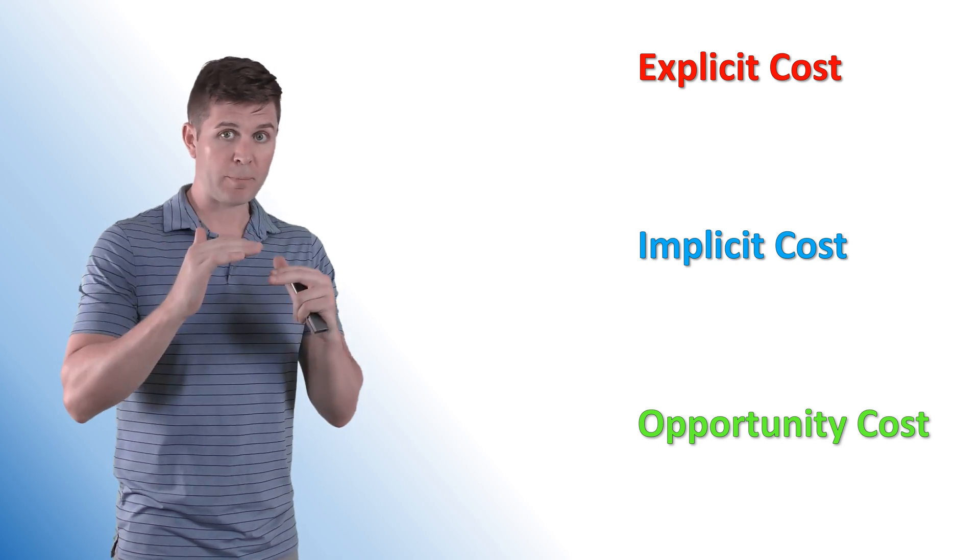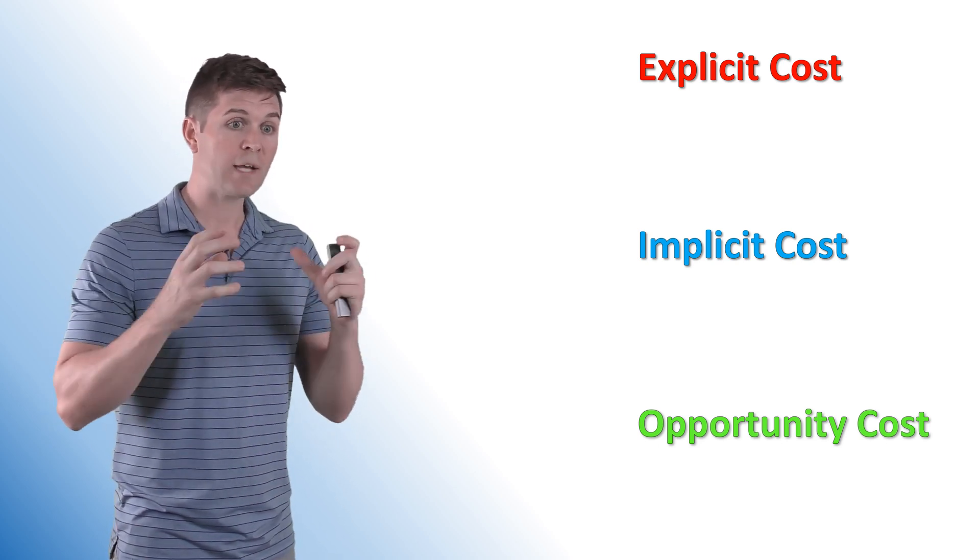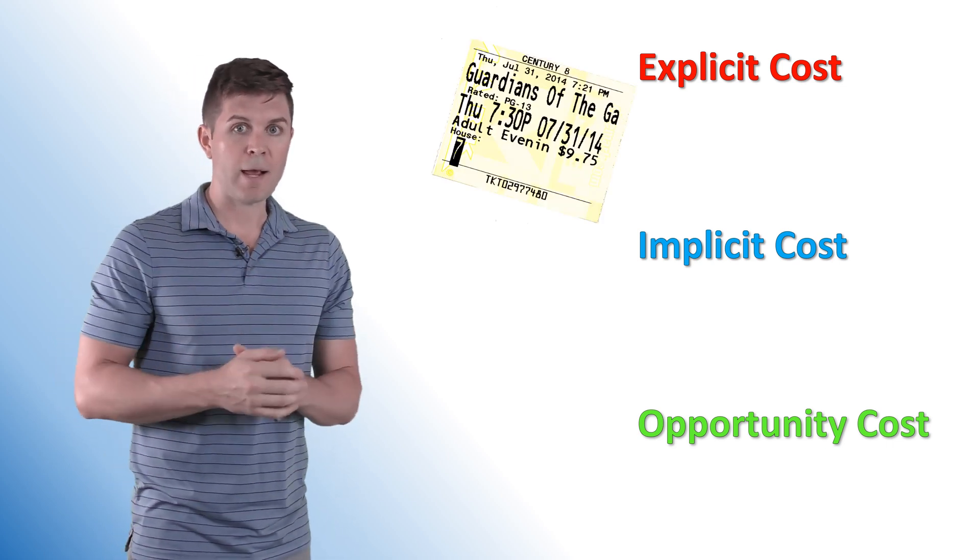Opportunity cost is broken down into two separate categories. We've got an explicit and implicit cost. Both of these together will create our opportunity cost.